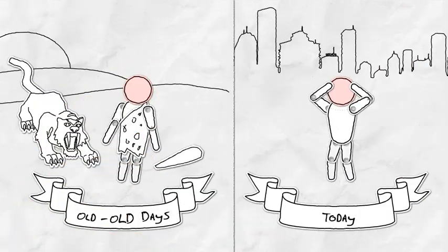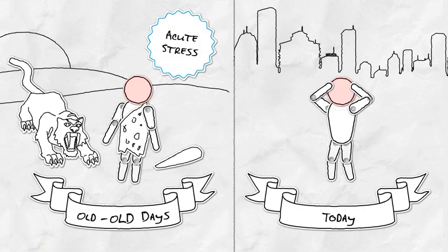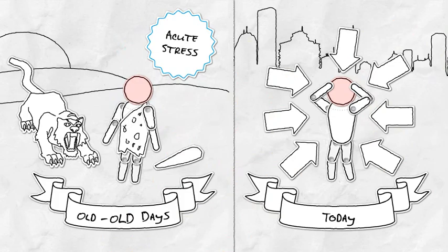So that's two kinds of stress. The burst of stress, followed by a return to normal like in the old, old days, is acute stress. The never-ending kind that many of us live with now is called chronic stress.